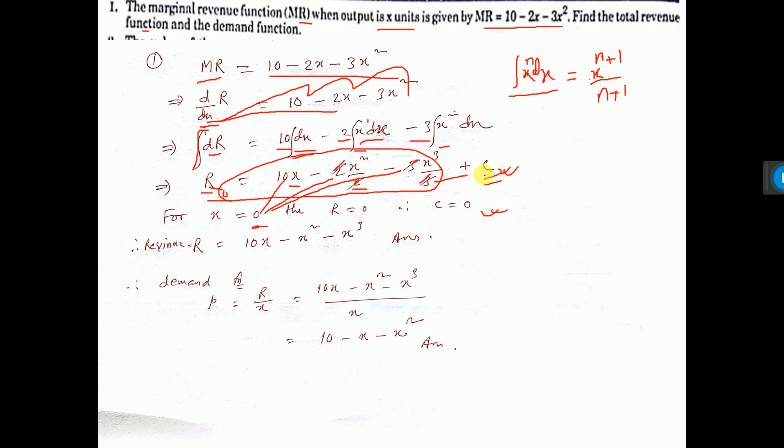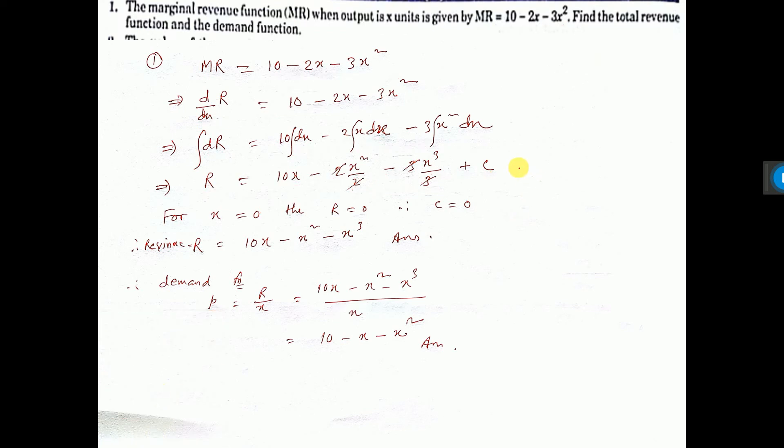So you put the value c here in this equation - which equation? Here, let's say this is equation number 1. Here you put this c equal to 0, then what you are getting: r is equal to this, that is written. This is the revenue, and that is our answer.